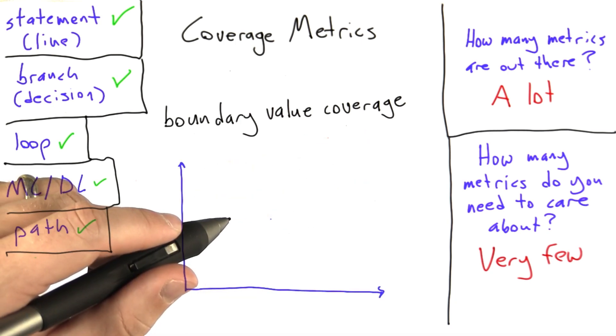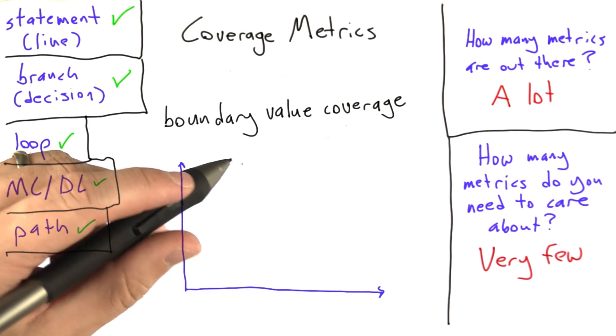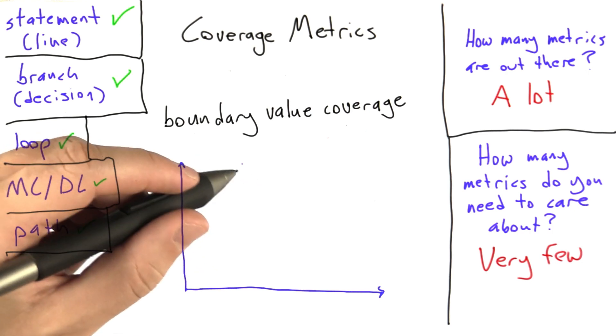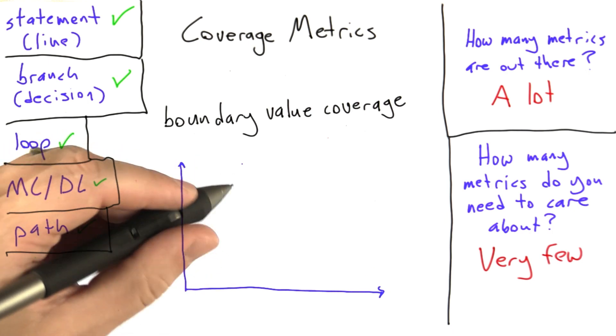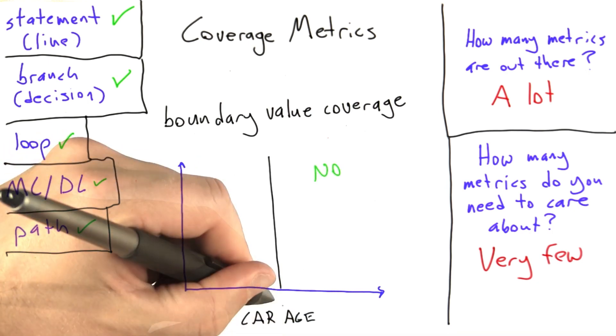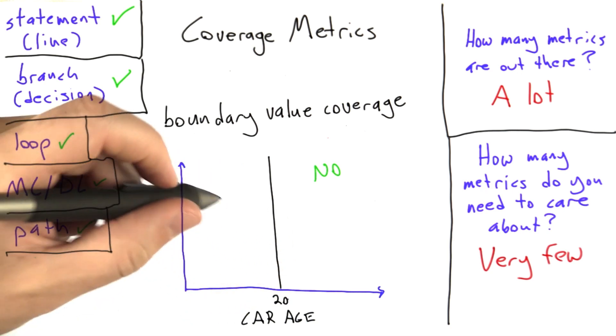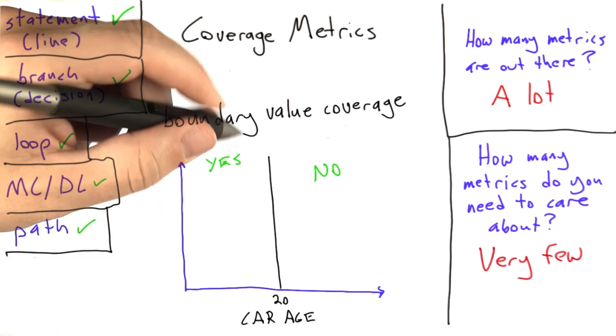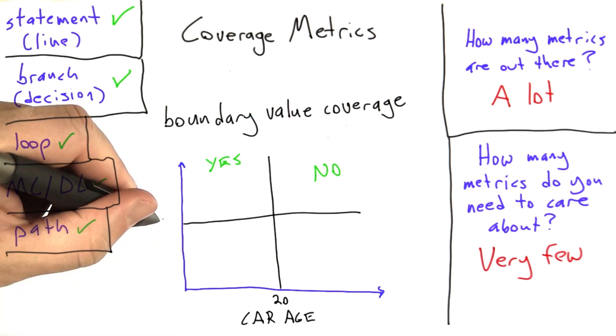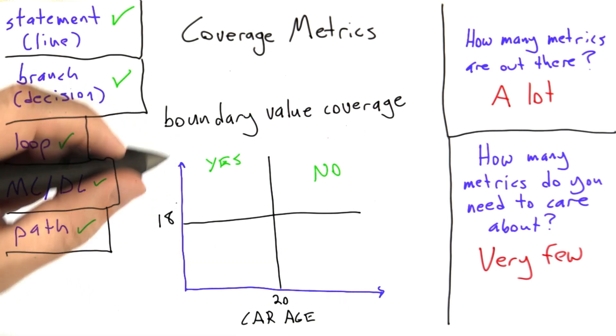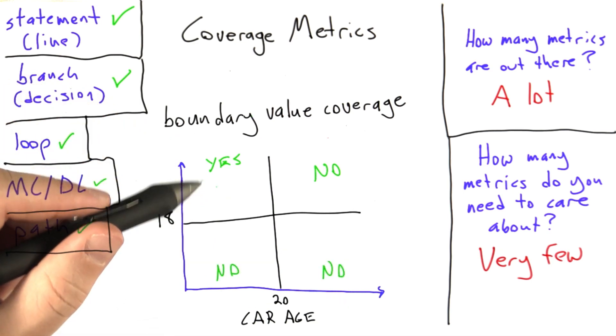Let's consider a program with two inputs. Assume for the sake of argument that these inputs are treated independently by the software that we're running. The first input is the age of your car, and we're an insurance company here, and we're going to decline to insure cars more than 20 years old. The other parameter is the age of the driver, and here we're going to decline to insure drivers who are less than 18 years old.